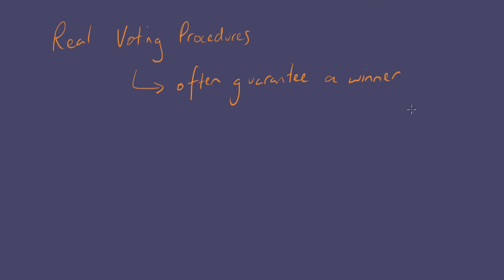In the real world, real voting procedures — maybe not always, but often — guarantee a winner. You might like to think about how we guarantee a winner in something like the electoral system for the House of Representatives in Australia. The issue is whether it's safe to take what looked like an attractive, plausible Condorcet process, tweak it to guarantee a winner, and whether that's going to have some drawbacks that come along for the ride.